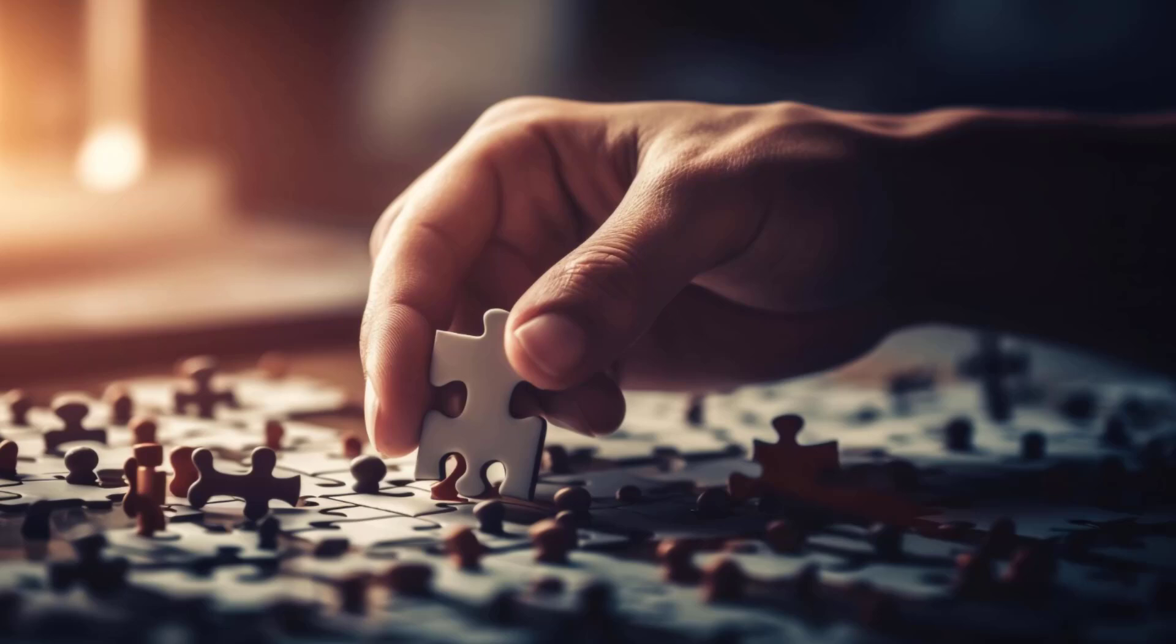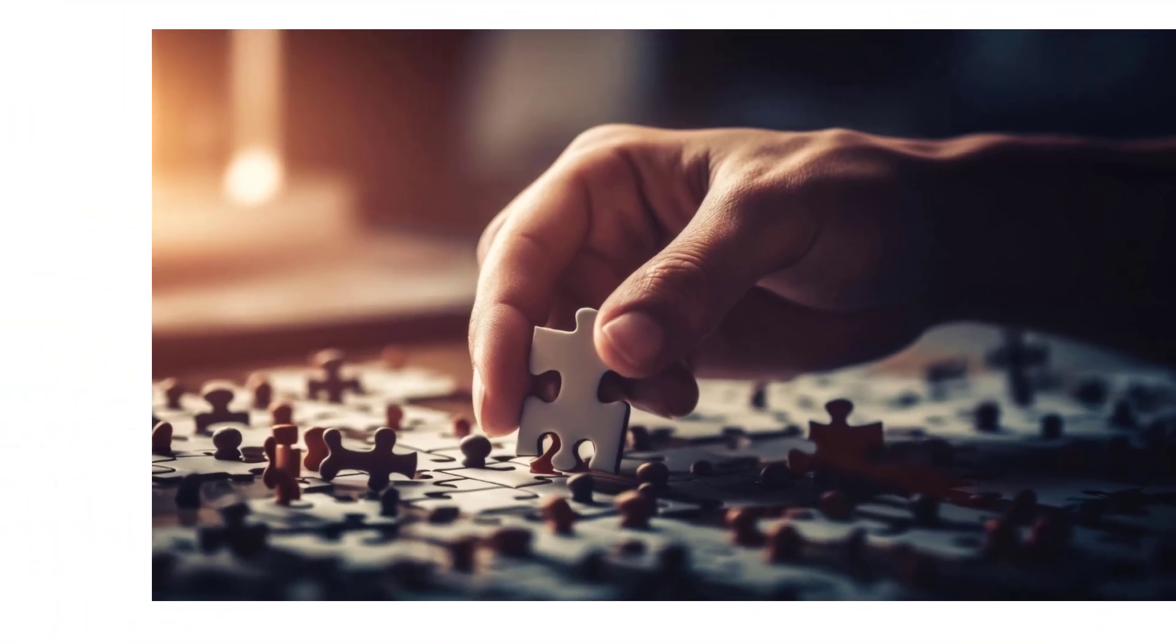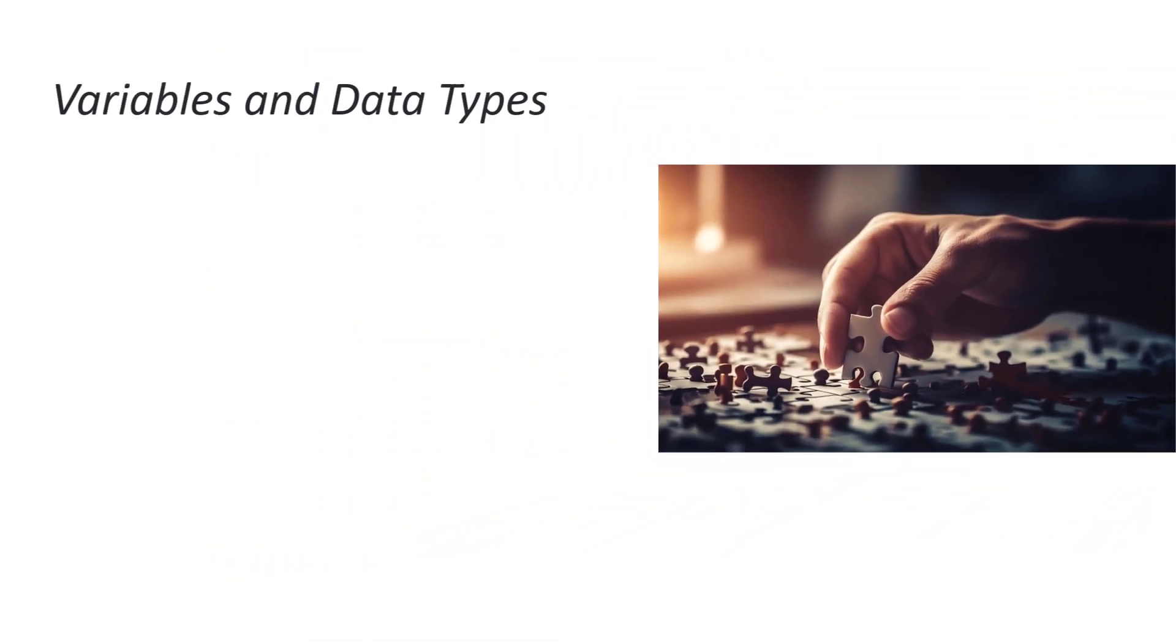Throughout this journey, we have explored various fundamental components of Python programming, each serving as a piece of the puzzle in mastering the language. Let's recap. Variables and data types - we learned how variables store data and the different data types available in Python, such as integers, floats, and strings. Collection types - we delved into collection types like lists, tuples, and dictionaries, which allow us to organize and manipulate data efficiently. Conditions and loops - we explored how conditions like if statements and loops, for and while loops, control the flow of our programs, enabling decision-making and iteration.